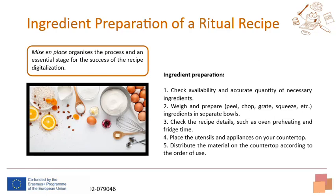If you have refrigerated items, put the bowl back in the fridge. Third, check the details of the recipe such as preheating the oven and the cooling time. Fourth, place the utensils and appliances on the worktop. Finally, distribute the material on the worktop according to the order of use.